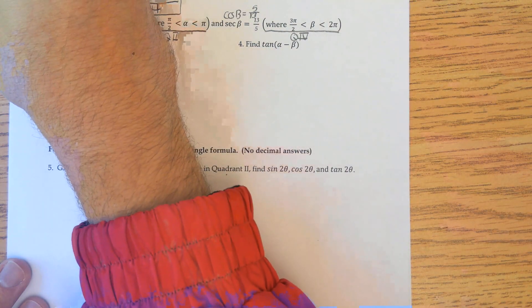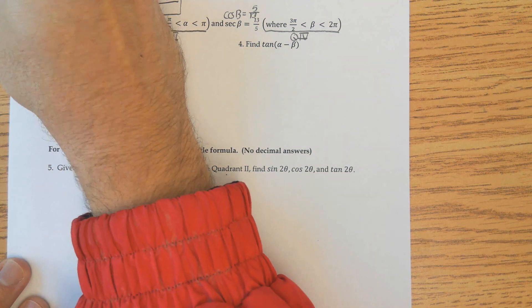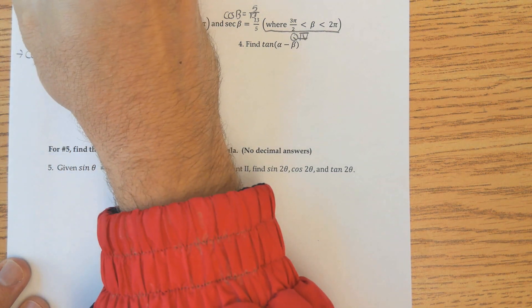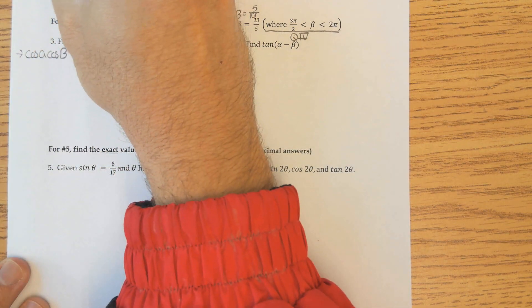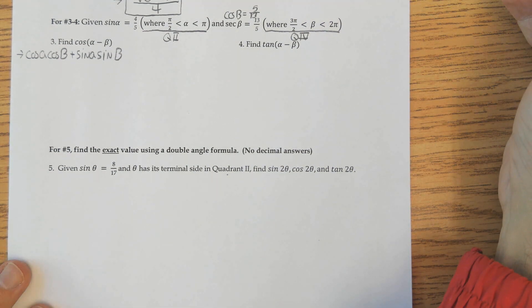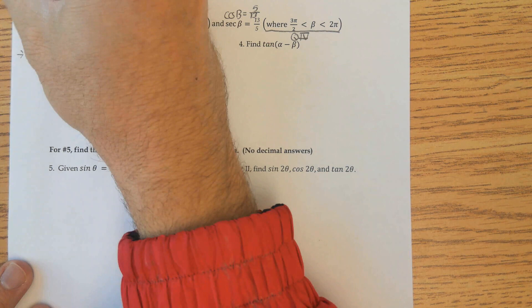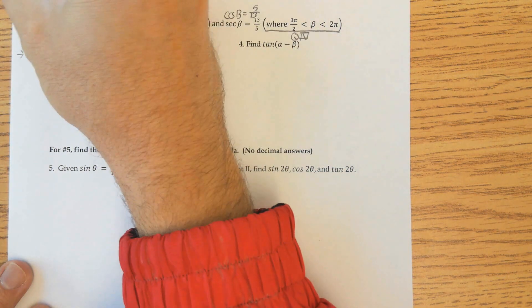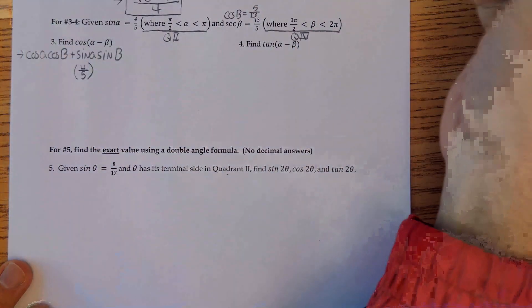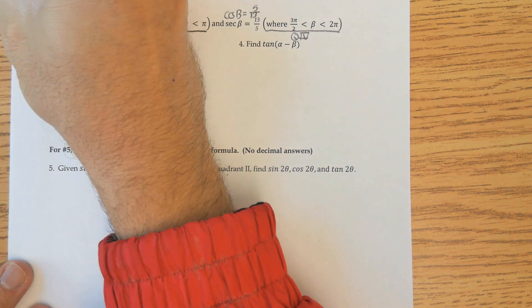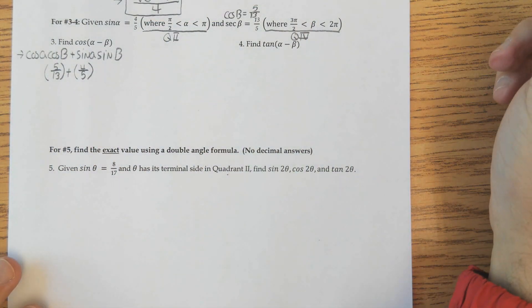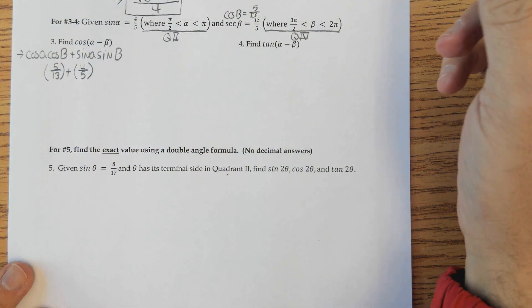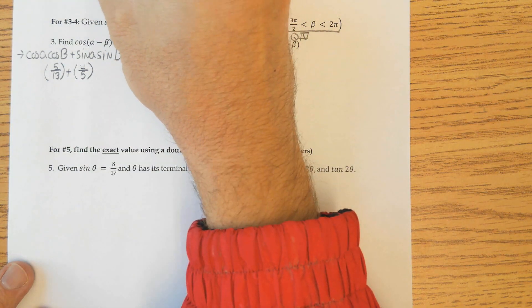Let's write out what we know. The identity for cosine of A minus B is cosine of little a times cosine of big B, plus sine of little a times sine of big B. What was given: sine of little a is 4/5 and cosine of big B is 5/13. The problem is I don't know cosine of little a and sine of big B, so I have to draw a triangle for both.